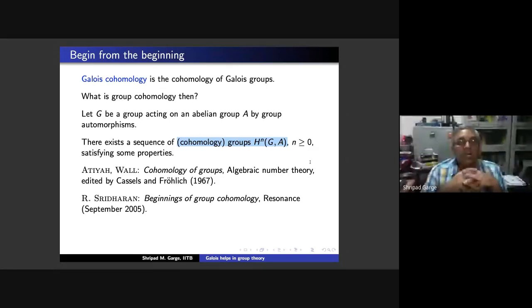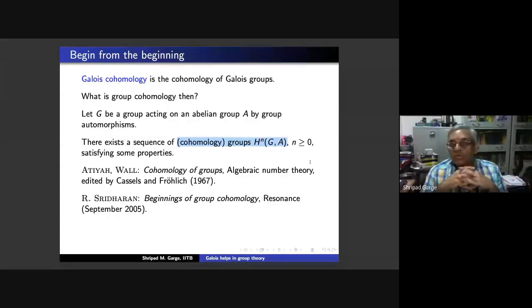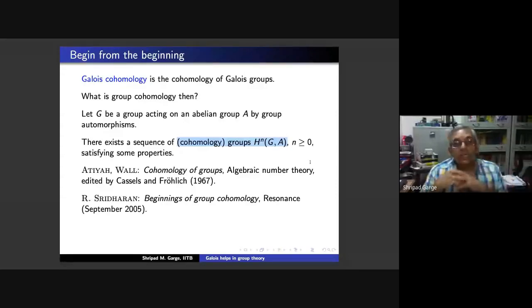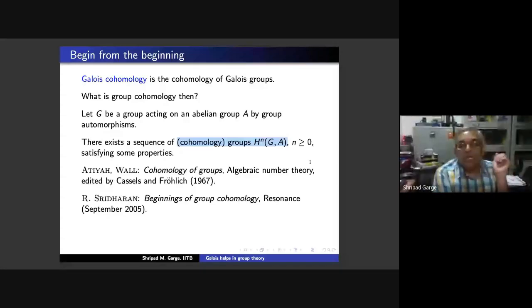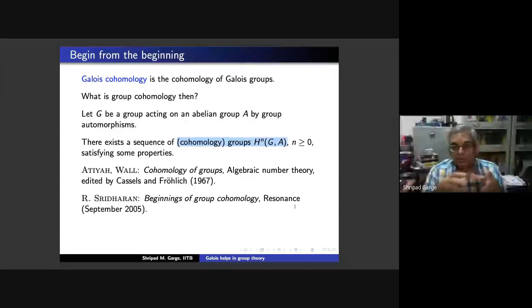If you want to know more about this, Atiyah and Wall have a very nice article in a book edited by Cassels and Fröhlich, titled 'Cohomology of Groups' — a very well-written article. If you want to know where group homology came even before Eilenberg, MacLane, and Eckmann defined it, you should read the very nicely written article by Sridharan, published in Resonance in September 2005. Just search for 'Sridharan, beginnings of group cohomology, Resonance' and you will find it online. This second article talks about how cohomology was present earlier — with Hilbert proving Hilbert 90, and the Brauer-Albert theorem — before these groups were formally defined.